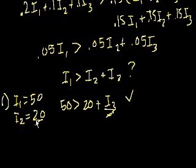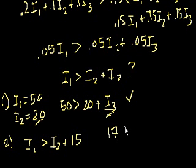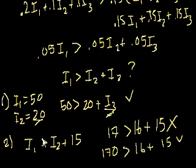Statement 2: the regular price of the least expensive item was $15, so I3 = 15. We need I1 greater than I2 plus 15, but we don't know I1 or I2. Maybe I1 is 17 and I2 is 16 — then 17 is not greater than 31. Or maybe I1 is $170 and I2 is 16 — then it would be true. So statement 2 alone is not sufficient. The answer is A — statement 1 alone is sufficient.